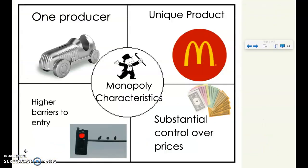When we're looking at a monopoly, we're looking at one producer with a unique product. A monopoly is a market or industry consisting of a single producer of a product that has no close substitutes. There's no competition — this is the one producer that creates this product. They are controlling the industry or the market when it comes to that good or service. It is a unique product with no good substitute; nobody else provides similar goods or services.